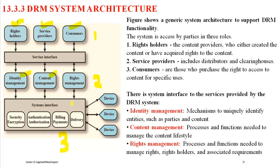Layer three is the system interface. This includes delivery options — where the product is delivered to the consumer — and billing and payments. Once the consumer pays, royalties are automatically given to the content creator (right holders) and commission is paid to the distributors. Authentication and authorization are also performed here. Finally, system encryption ensures that all information flow and transactions between the entities are completely encrypted.